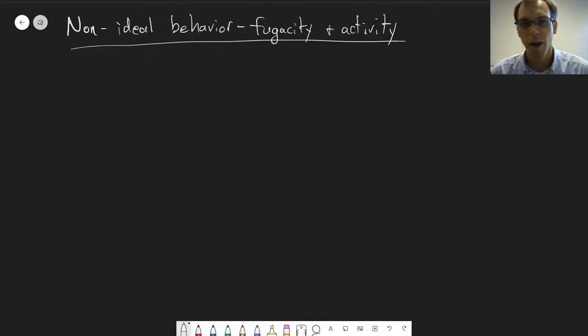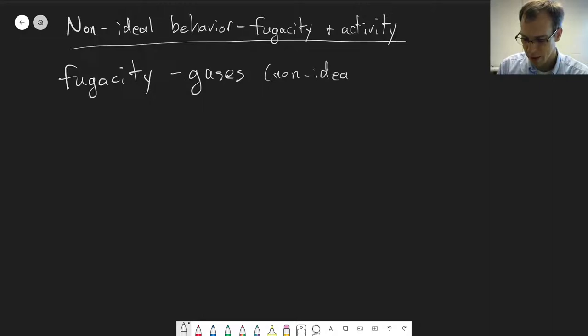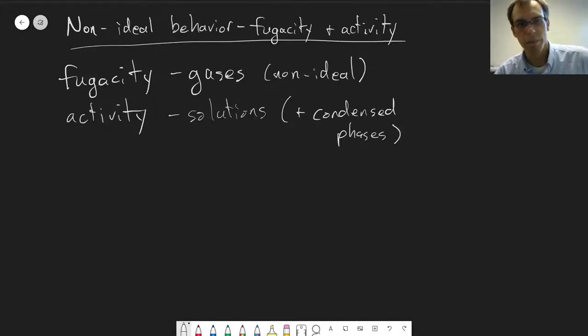The two concepts we're going to be talking about are fugacity and activity, which are very similar concepts. Fugacity applies to gases and is the way we account for non-ideal behavior in gases. And activity is how we deal with it in solutions and condensed phases. But primarily, we think about this in terms of solutions. So this could also apply to solids and liquids, but typically we think about activity as being something associated with solutions.